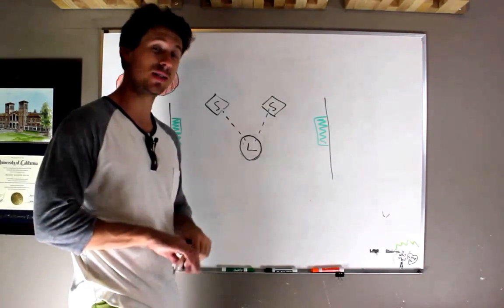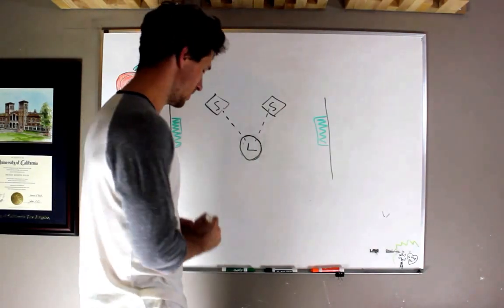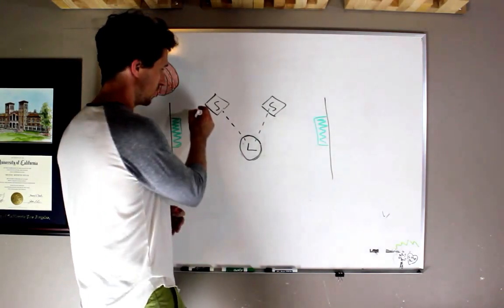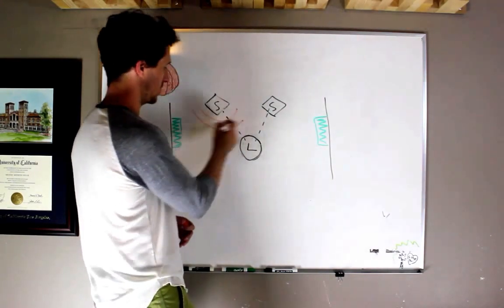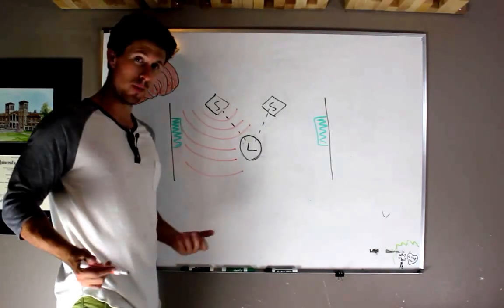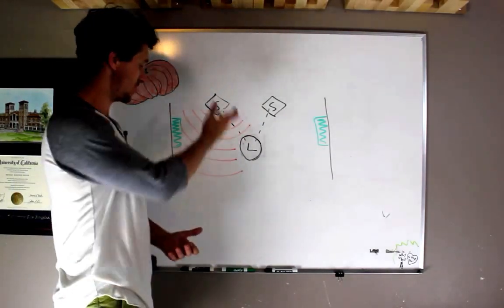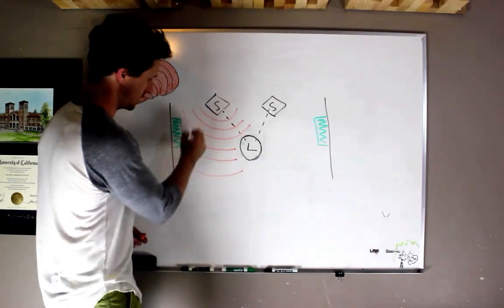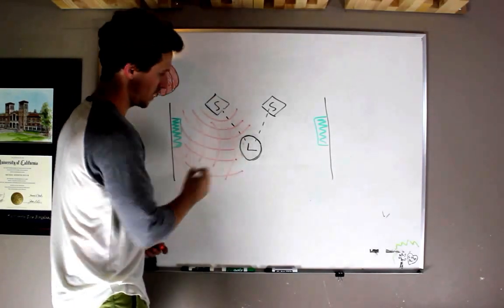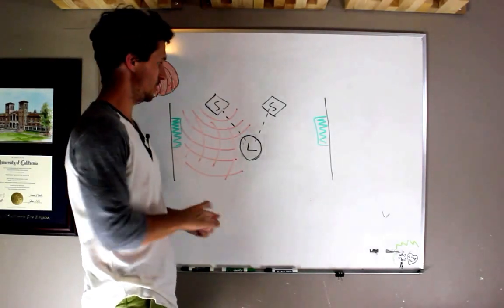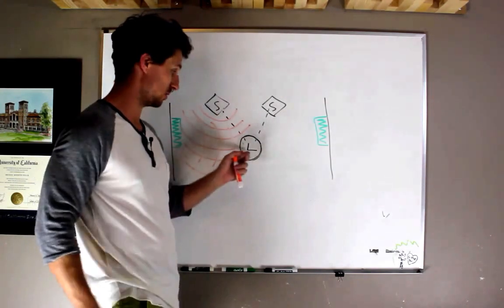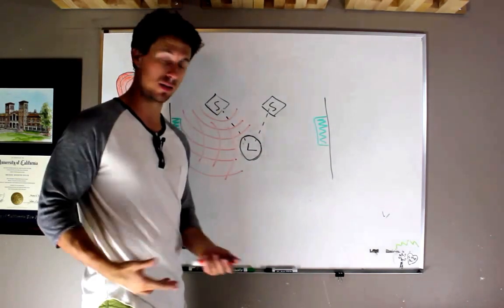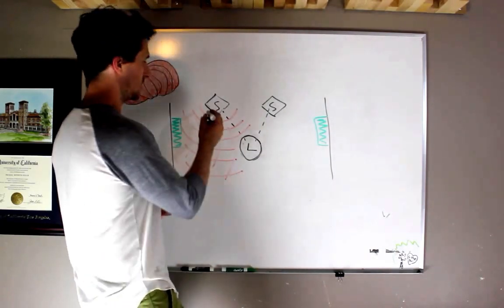Now, of course, that's not reality. Reality is that sound travels spherically out from the speakers. Now, if this absorber wasn't here, the sound would bounce off this wall and go back to the listening position. And so we have a bad situation here because we have the direct signal coming to the listener, and then we have a delayed signal coming back to the listener as well.